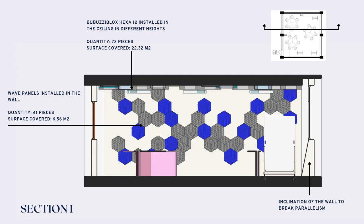Another adjustment is that the wall on the right has an inclination to break the parallelism with the opposite wall and thereby eliminate the defect of flutter echo.